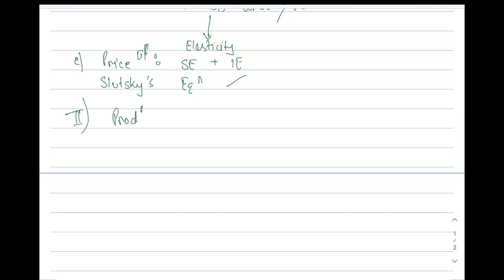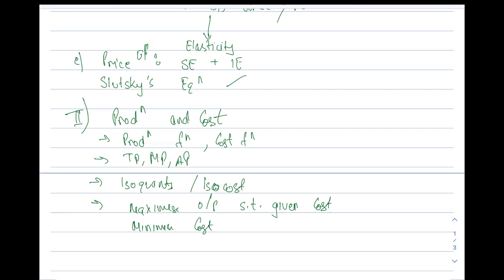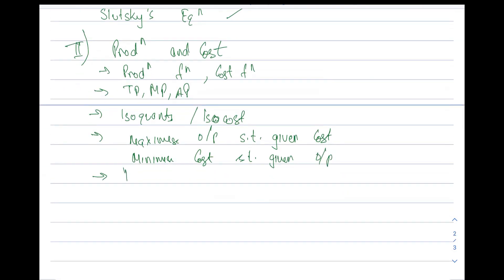After that we will go to the second unit, which will be on production and costs. Here we will be covering the production function, cost function, total product, marginal product, average product, isoquants, and isocost curve. There are two types of numericals: how to maximize output subject to a given cost, or how to minimize cost subject to a given level of output. We will also see the meaning of duality and some laws of return.